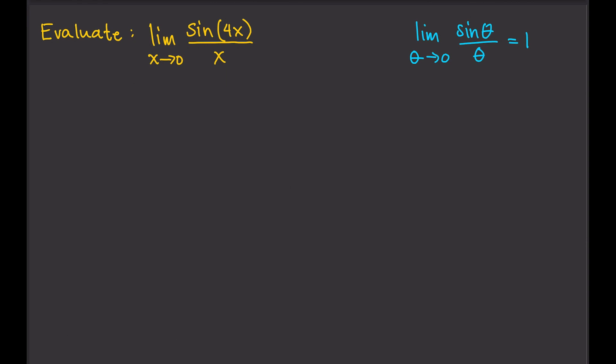So how can we use that result to find the limit of this? Observe that here, the argument of sine is theta and the denominator is also theta. The goal here is to try to make the argument of sine and the denominator equal, because that's what we have here. If we can do that, then we can just use this result to find the limit.